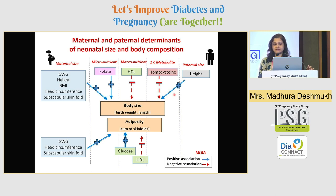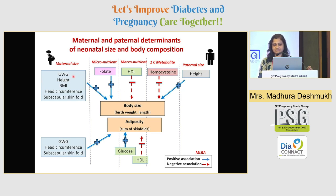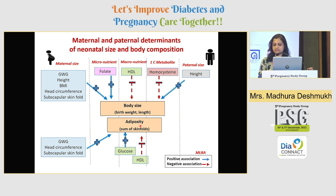To show the independent associations of maternal and paternal determinants of neonatal size and body composition, we performed multiple linear regression analysis adjusting for gestational age, gender, and socioeconomic status. Positive or direct associations are shown by solid lines or plus signs, and negative or inverse associations are shown by dotted lines or minus signs. Maternal size parameters — including gestational weight gain, height, BMI, hair circumference, and subscapular skinfold — were directly associated with newborn size. Maternal folate had a positive association while HDL and homocysteine had inverse associations with body size of the newborn. Maternal glucose had a direct association with adiposity or body composition of the baby, and HDL had a negative association. Additionally, paternal height had a positive association with newborn size.